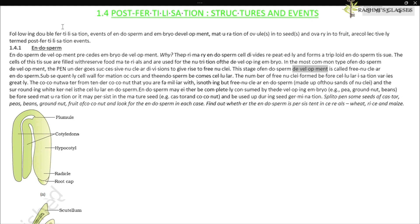This stage of endosperm development is called free nuclear endosperm. Subsequently, cell wall formation occurs and the endosperm becomes cellular. The number of free nuclei formed before cellularization varies greatly. The coconut water from tender coconut is nothing but free nuclear endosperm.